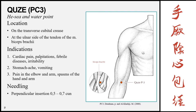The next point is Qu Ze, pericardium 3. This is the He-sea and water point of the meridian, and it is located on the transverse cubital crease, at the ulnar side of the tendon of the biceps brachii muscle — that is the medial side. The indications include cardiac pain, palpitations, febrile diseases, irritability, stomach ache, vomiting, and local conditions such as pain in the elbow and arm and spasms of the hand and arm. Remember this is a frequently used point. Insertion is perpendicular, 0.5 to 0.7 cun.